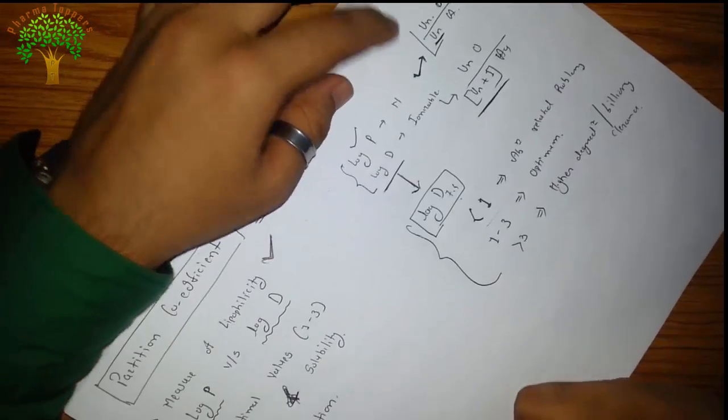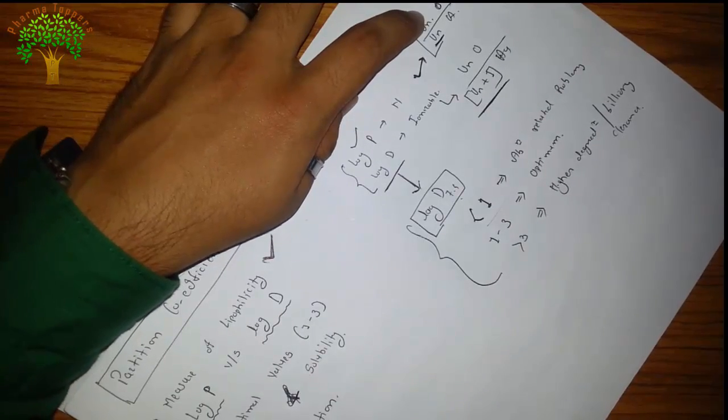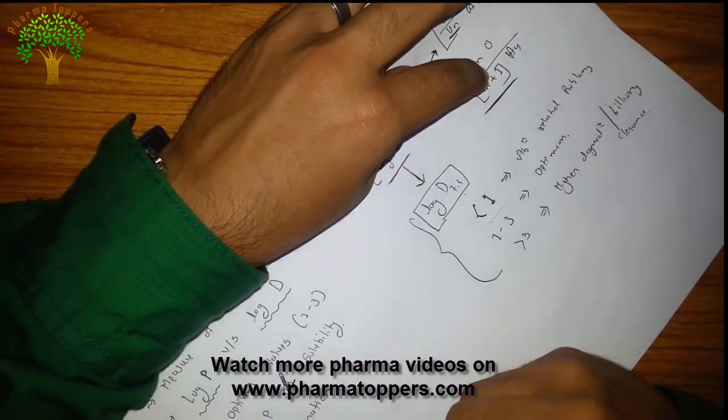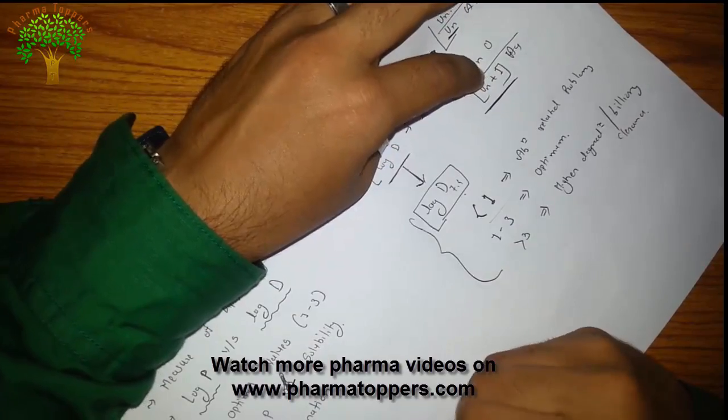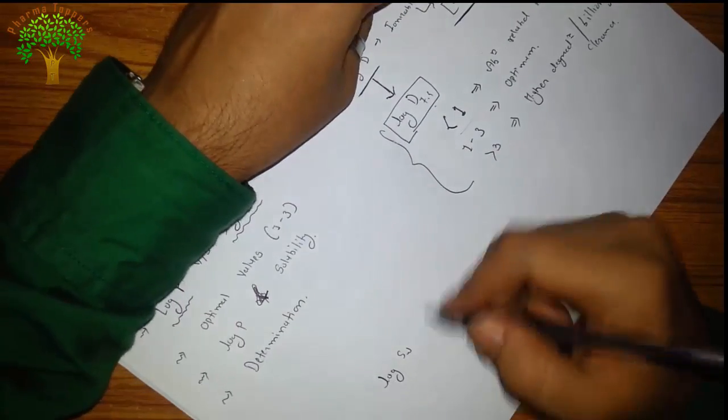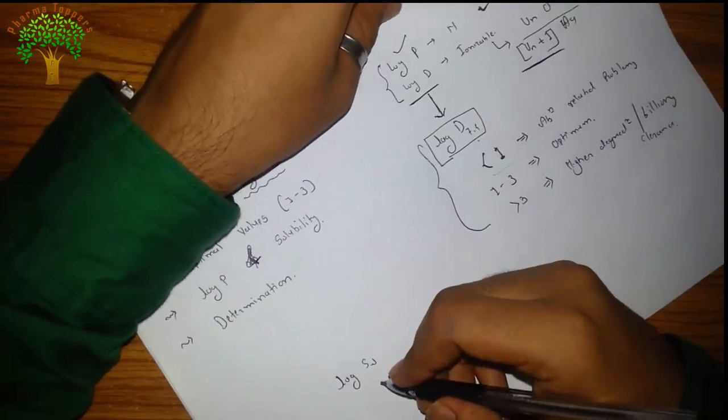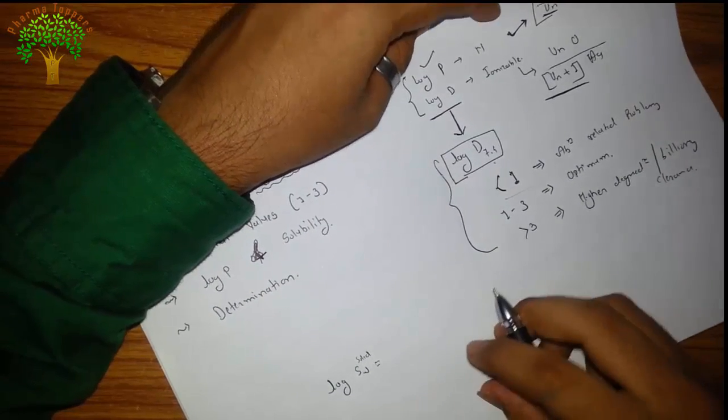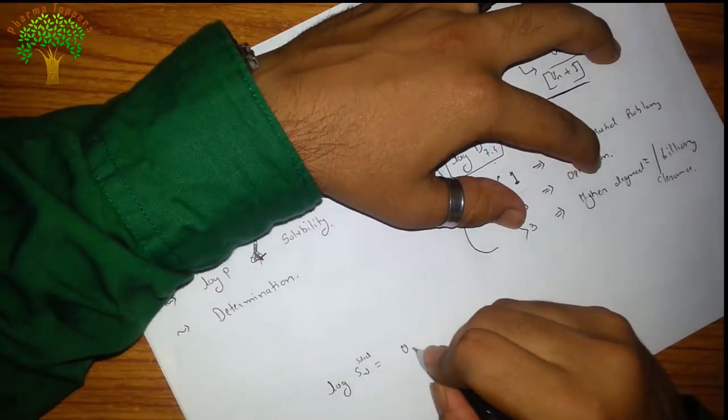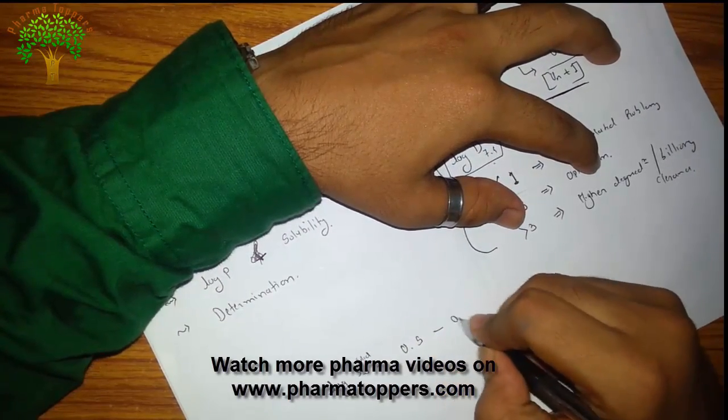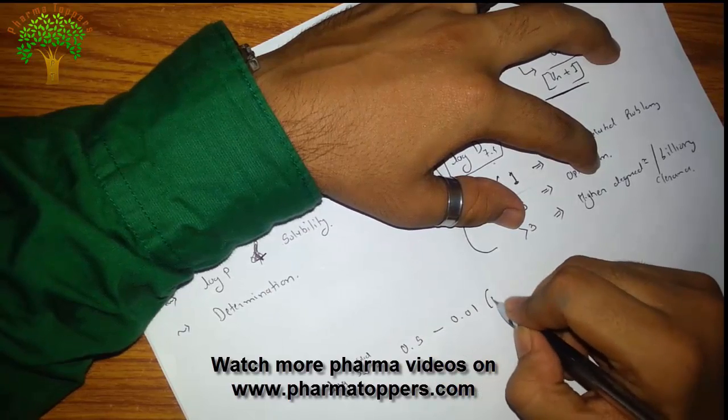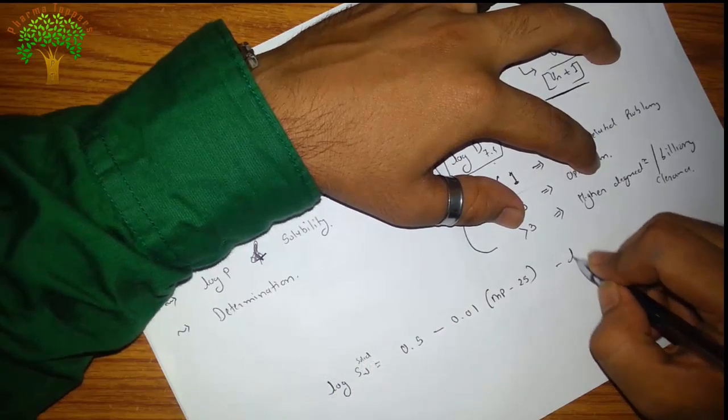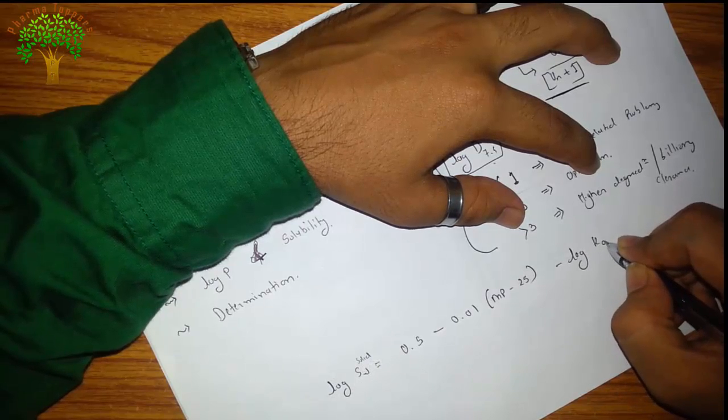What is the relationship between log p and solubility? There is one general equation: the log solubility of a solid material is equal to 0.5 minus 0.01 times melting point of compound minus 25, which is the room temperature, minus log K oil in water partition coefficient.